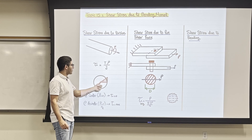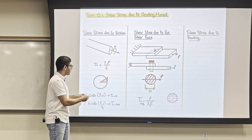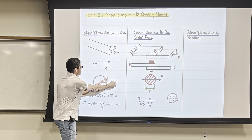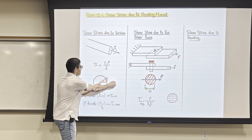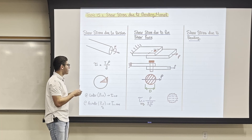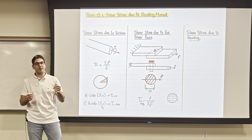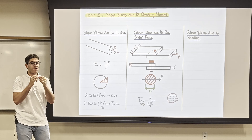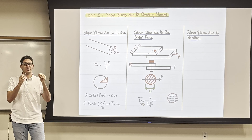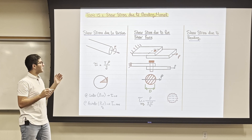If you remember before, when we wanted to calculate tau for any point within the cross-section, tau was a function of the radial distance. So any point away from the center of the circle — the furthest you go, the higher the stress. And whenever we have stresses that are not uniform, meaning at any point within the cross-section the stresses are not equal, we call it non-uniform stress.